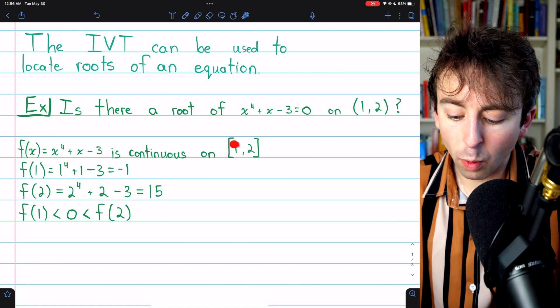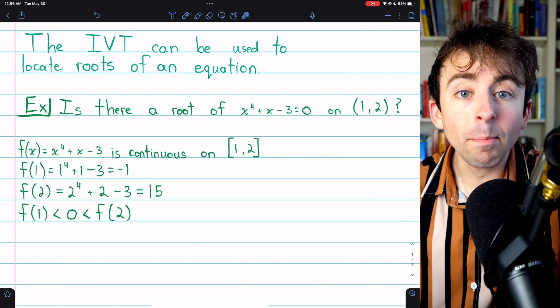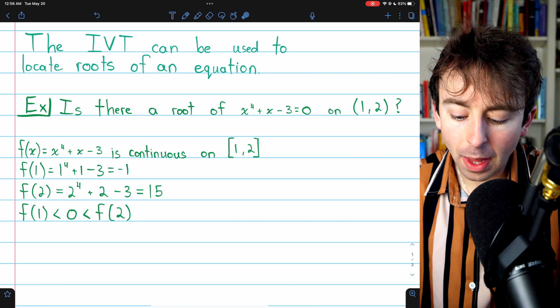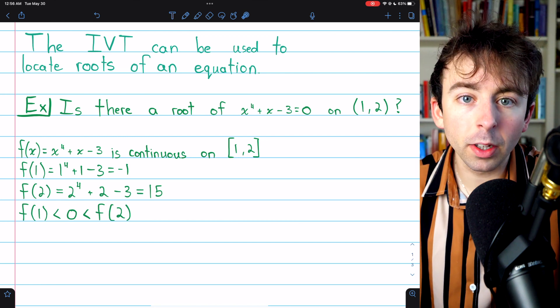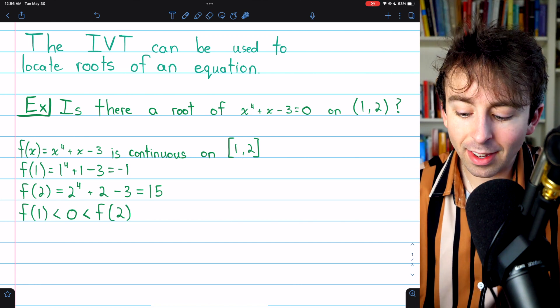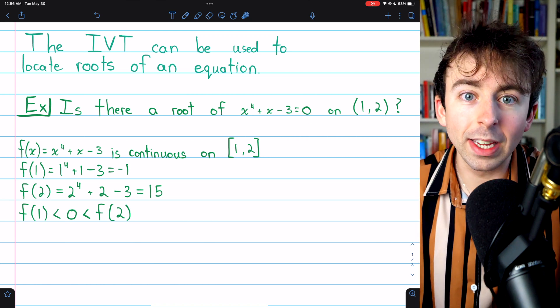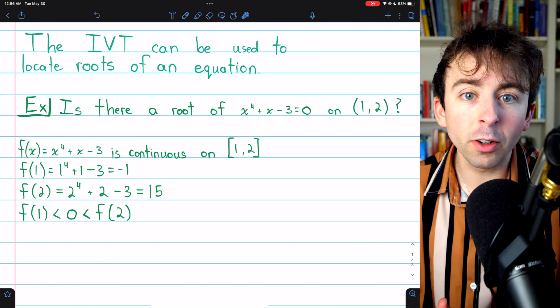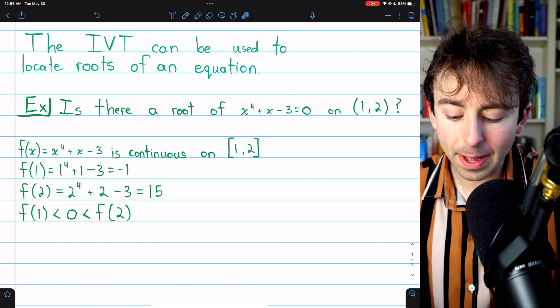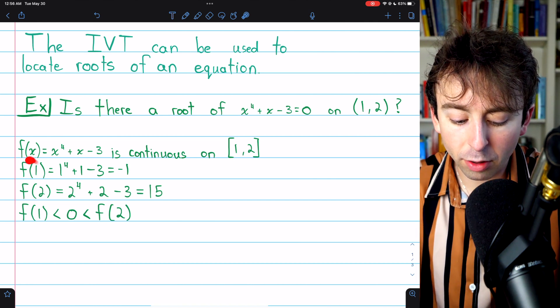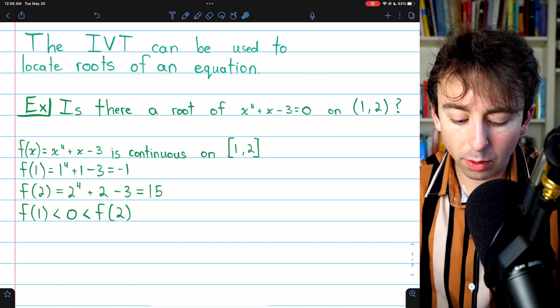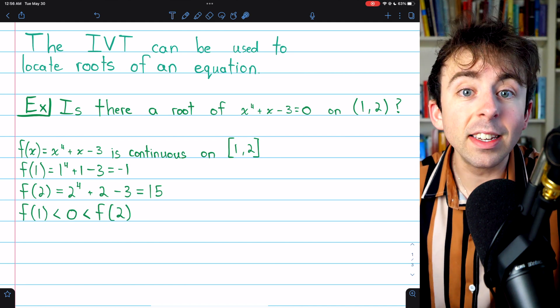Any number between f(1) and f(2) must be taken on by the function at some point in the interval. So the only question that remains is, is 0 a number between f(1) and f(2)? If so, the function must pass it at some point. So we look at f(1), the starting value. Plugging 1 in, we find that f(1) = -1.